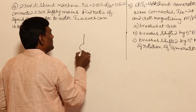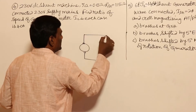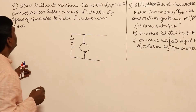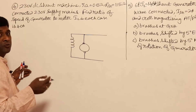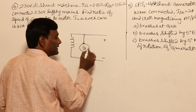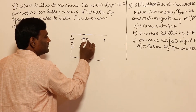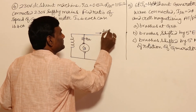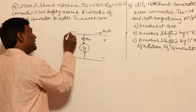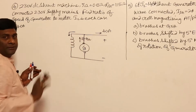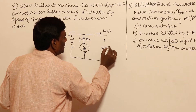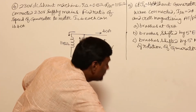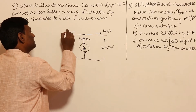For the shunt machine, first consider it as a generator. The armature resistance RA is present. Line current is 40 amperes. Some shunt field current will flow through the field winding, so IA equals IL plus ISH. The voltage is 230 volts and the shunt field resistance is 115 ohms, so ISH equals 230 divided by 115, which is 2 amperes.